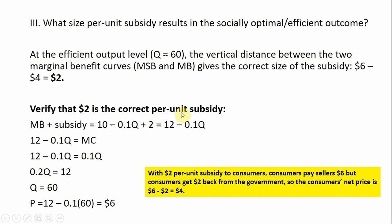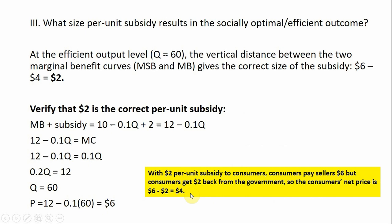So the argument here is that if we were to subsidize this market with a $2 per unit subsidy, the equilibrium would result in 60 units of output — the efficient amount of tick control product being applied. We take the marginal benefit and add the $2 subsidy to it, giving the equation 12 minus 0.1Q. Setting that equal to marginal cost and solving, we get Q equals 60 and the price of $6. With the $2 per unit subsidy to consumers, consumers will pay the sellers $6, then get back $2 from the government for each unit purchased. So the consumer's net price is 6 minus 2, meaning consumers will be out of pocket $4 when they buy a unit of tick control product.